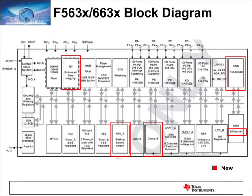The F563X and F663X families are the high-end devices — 100-pin parts with 256K flash and 16K RAM. The F563X is the flagship part in the 6xx family and integrates full-speed USB along with attractive modules such as the EDI enhanced data integrity module, RTC with backup battery, Comparator B with enhancements to the DAC-12 and ADC-12, and a host of timers.